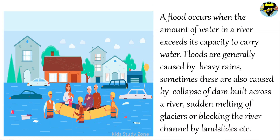A flood occurs when the amount of water in a river exceeds its capacity to carry water. Floods are generally caused by heavy rains. Sometimes they are also caused by collapse of a dam built across a river, sudden melting of glaciers, or blocking of river channels by landslides.